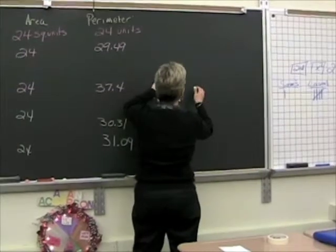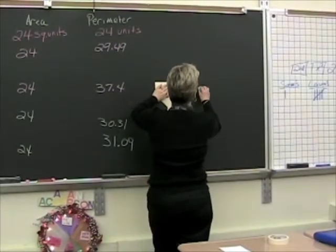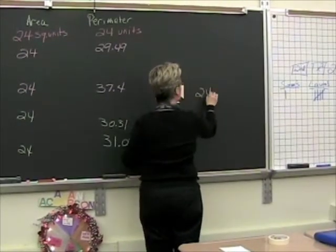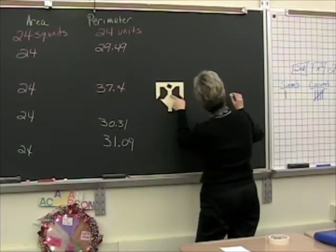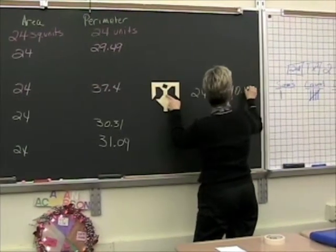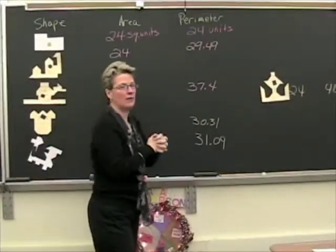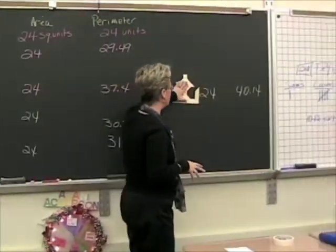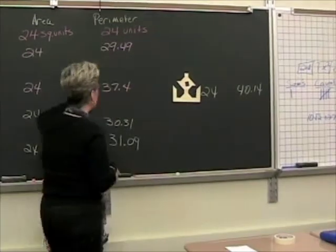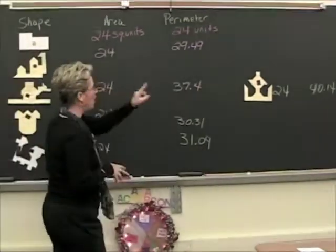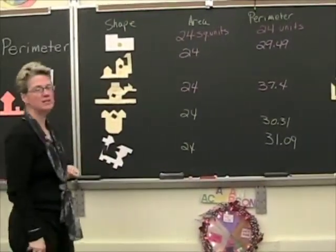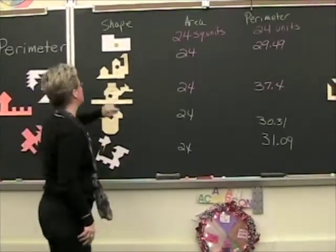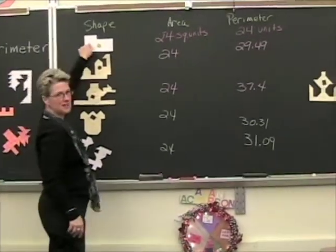This one has 24 square units as the area and a perimeter of 40.14. Now this is the winner of all these shapes — that one has the most perimeter. Which one has the smallest perimeter? The simple one — yes, the simple one right over here.